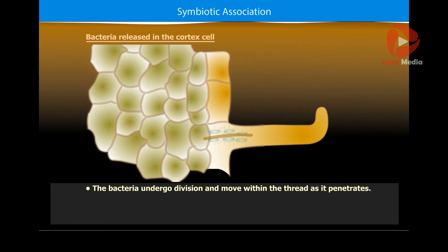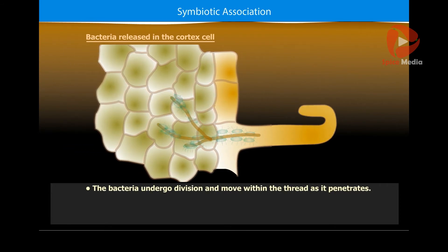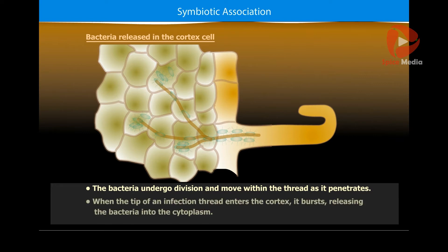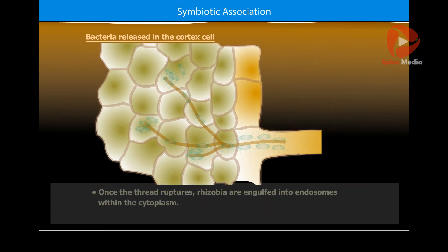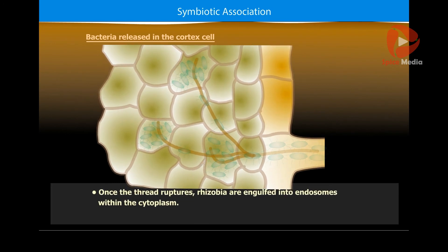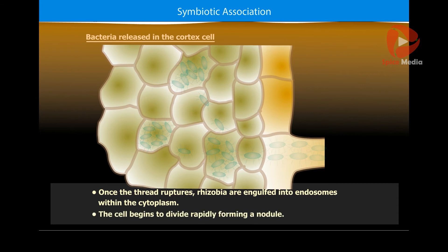The bacteria undergo division and move within the thread as it penetrates. When the tip of an infection thread enters the cortex, it bursts, releasing the bacteria into the cytoplasm. Once the thread ruptures, rhizobia are engulfed into endosomes within the cytoplasm.